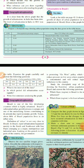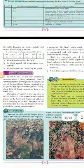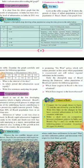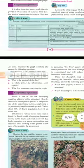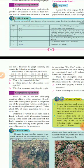Look at the table on page number 49. This table shows the growth of share of urban population as a total population in Brazil. You are supposed to draw a line graph from this table. The figure on the left side also has three questions given.